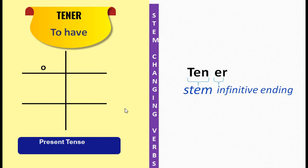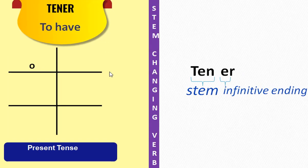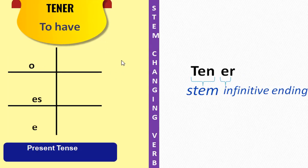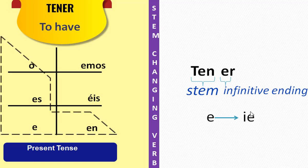First, let's define the endings for an ER verb: -o, -es, -e, -emos, -éis, -en. In a stem-changing verb, the vowel A in the stem changes to IE. Remember, this transformation occurs only in the 'boot' region — meaning YO, TÚ, ÉL/ELLA/USTED, ELLOS/ELLAS/USTEDES. The NOSOTROS and VOSOTROS forms are unaffected and do not undergo the stem change.